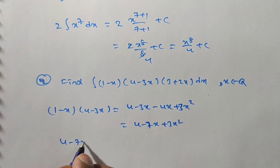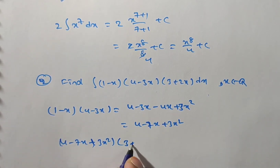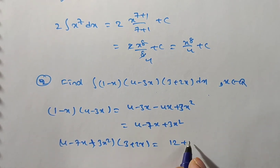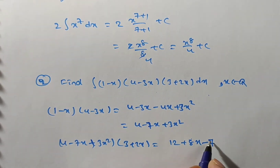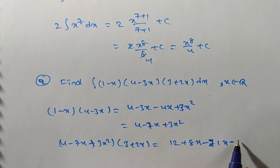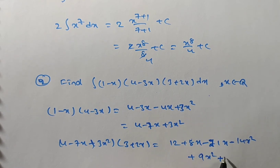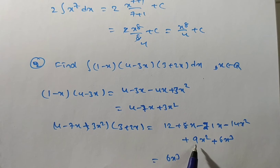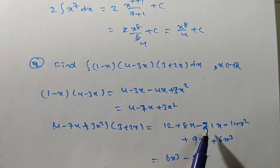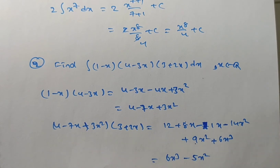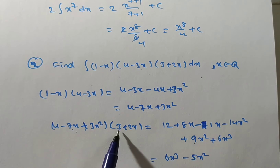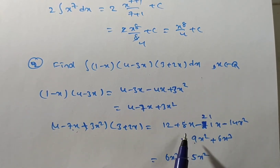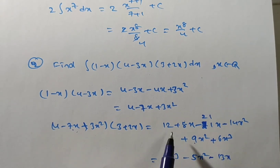Next, (4 minus 7x plus 3x squared)(3 plus 2x) expands to: 12 plus 8x minus 21x minus 14x squared plus 9x squared plus 6x cubed. Collecting terms: 6x cubed, then x squared terms give 9 minus 14 equals minus 5x squared, x terms give 8 minus 21 equals minus 13x, and the constant is 12.